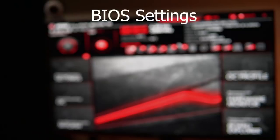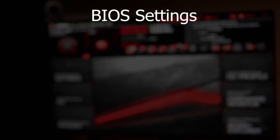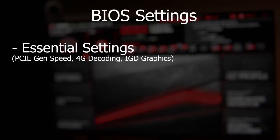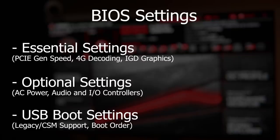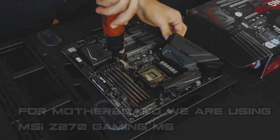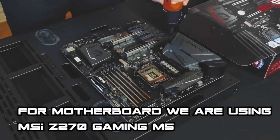The settings will be in three different parts. First, you have the essential settings — these are the ones you definitely want to keep an eye on and make sure are set properly. Second, you have optional settings that can benefit you if you choose to use them. Third, you have the USB booting settings, for people that want to use a USB for their operating system whether it's HiveOS or any other mining Linux operating system — especially helpful if you're also planning on running another hard drive or SSD with a different operating system.